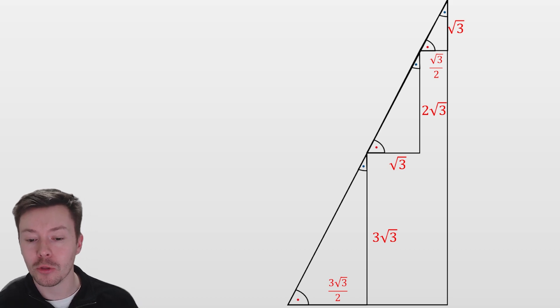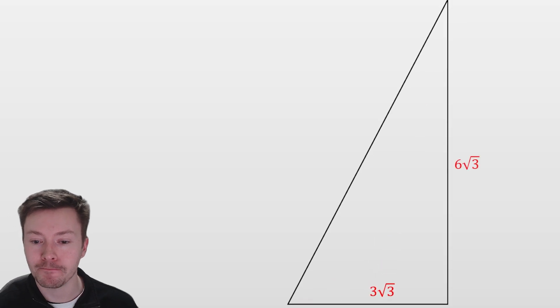Along the base, 3√3/2 + √3 + √3/2 gives me 4√3/2 + √3, which is 2√3 + √3, giving me 3√3. So I've got a width at the base of 3√3 and a height of 6√3.